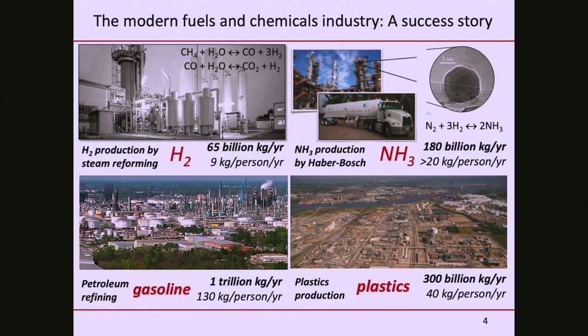Why do we make this hydrogen? To make fertilizer — predominantly ammonia — at 180 billion kilograms a year, more than 20 kilos per person per year on average. These Haber-Bosch facilities, a few hundred around the earth, are loaded with iron nanoparticles whose job is to take nitrogen from air plus hydrogen from methane to make that ammonia. That fertilizer goes into crops, which we eat directly or feed to animals. Half the fixed nitrogen in your bodies has touched one of these iron nanoparticles.